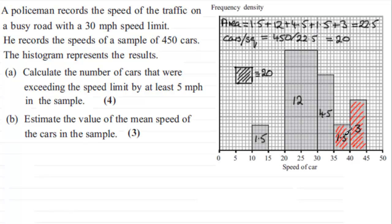So if I know this area here 1.5 plus 3, a total of 4.5, all I've got to do is 4.5 times 20. And so therefore for part a the number of cars exceeding 35 mph equals 4.5 times 20 which comes to 90.